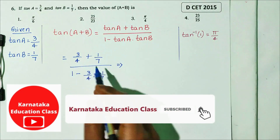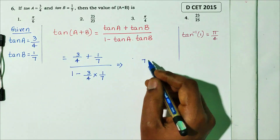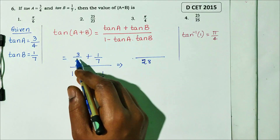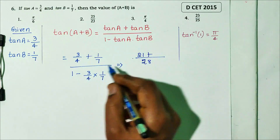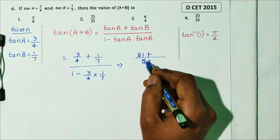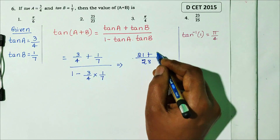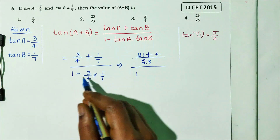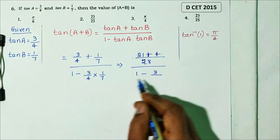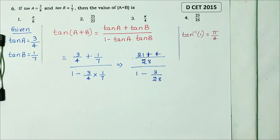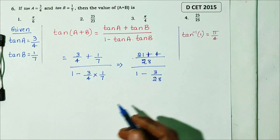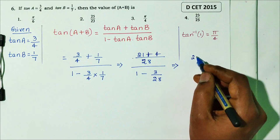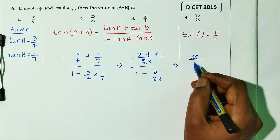Next, simplify by taking LCM. The LCM of 4 and 7 is 28. In the numerator: 7 times 3 is 21, plus 4 times 1 is 4, giving 25. In the denominator: 28 minus 3 gives 25, divided by 28. So we get 25 over 28 divided by 25 over 28.